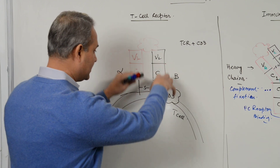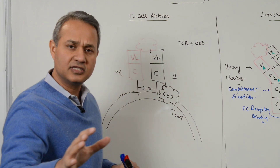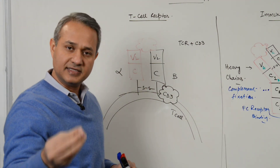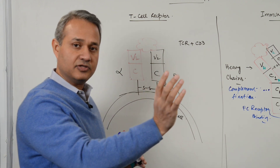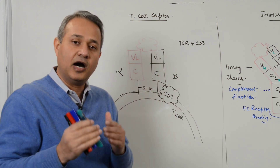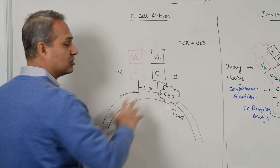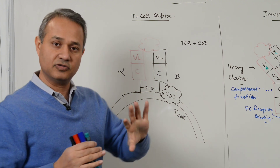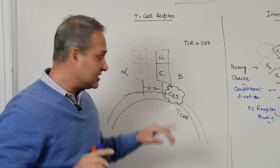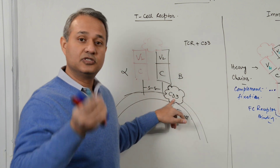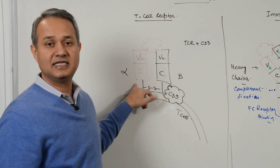These receptors keep getting internalized and then recycled back. That is true for all cells where there are receptors — receptors can be internalized and recycled back to the surface depending on how the cell wants to regulate its sensitivity. Normally about 30,000 receptors are present on the surface of a T cell.